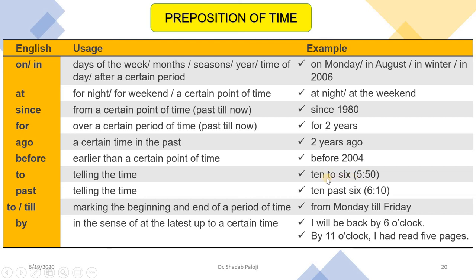Both 'to' and 'past' are for telling time but depend on how we portray it. For example: 5:50 could be said as '10 to 6' — 10 minutes remaining for 6. 'Till' or 'to' marks the beginning and end of a period — 'from Monday till Friday we have classes' or 'from Monday to Friday.' Both are correct. 'By' means at the latest, up to a certain time — 'I will be back by 6 o'clock' or 'by 11 o'clock I had read five pages.'